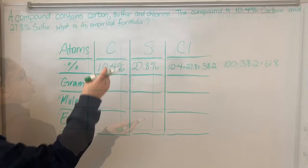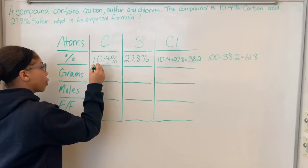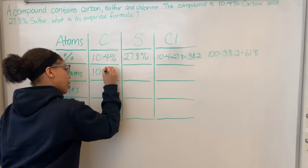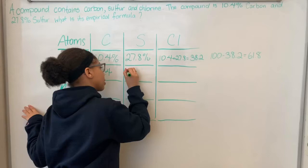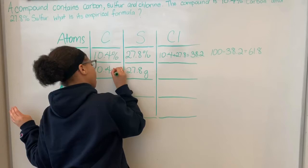We know that whatever we have as our percent is also our grams. So we have 10.4% carbon, which means 10.4 grams of carbon. Same with sulfur, we have 27.8 grams. And for chlorine, we have 61.8 grams.